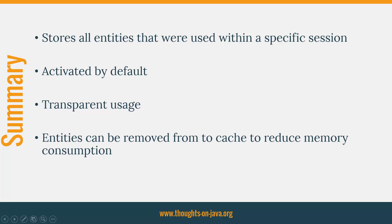That's all about the first level cache. The first level cache is activated by default and stores all entities which were used within a specific session. Hibernate hides the calls to the cache behind its API so that you don't need to take care of anything. Very large sessions which work with a lot of entities might require removing entities programmatically from the cache to reduce the memory footprint.